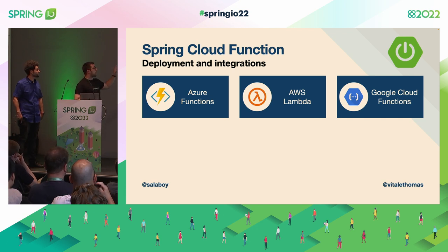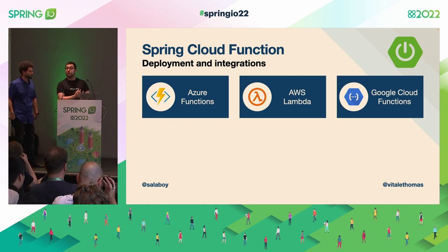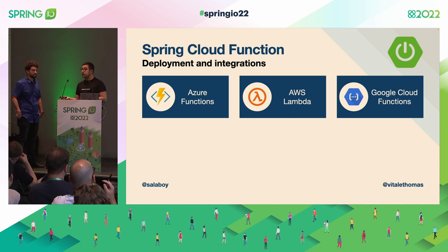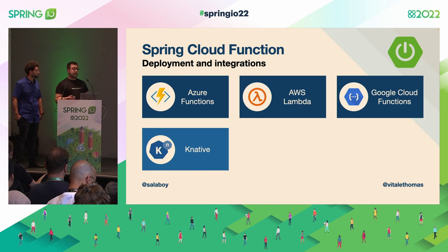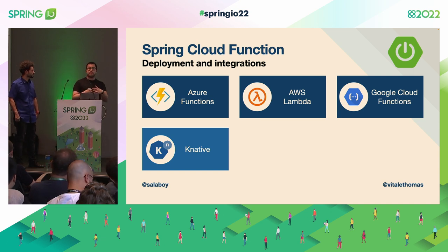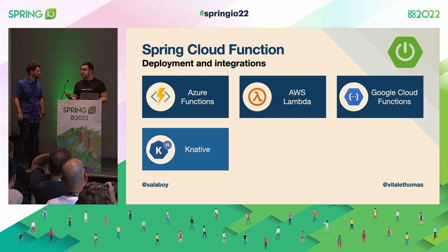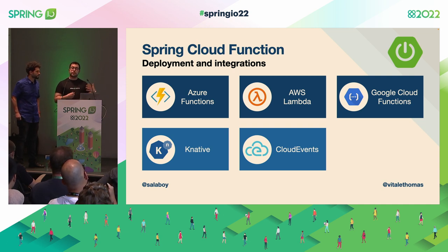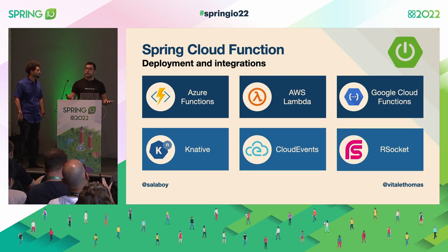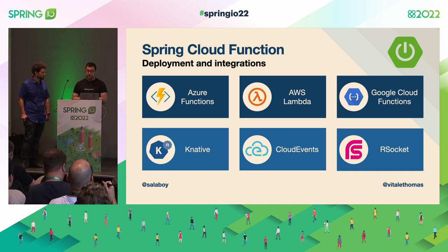This is just a summary of what we did — data processing, composing different functions. The interesting part is that once we have the business logic as standard functions, we can expose or deploy them in different platforms using different strategies without changing our code — just relying on the Spring Cloud Function framework. We can use adapters available in the Spring Cloud Function project to deploy those functions on Azure Functions, AWS Lambda, and Google Cloud Function. Or — as we are doing today — we can containerize with Buildpacks and deploy on Knative, on Kubernetes. We can even trigger the functions not just via HTTP but using event-driven strategies with cloud events, or R-Socket — a reactive binary protocol — which we are also using in our architecture.